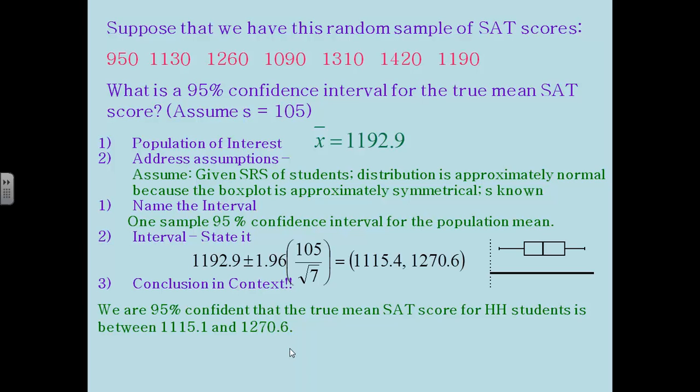Our assumptions: we're given a simple random sample. The distribution is approximately normal. Now in this case we don't know whether it's normal so we can look at the box plot. So I drew a box plot of those seven scores and you can see that the box plot is symmetrical, which leads us to believe that the distribution will be approximately normal. Standard deviation is known, so we want to name the interval. It's a one sample 95 percent confidence interval. We want to write out the formula and then draw our conclusion in context.